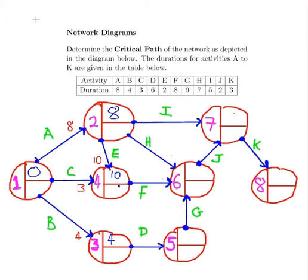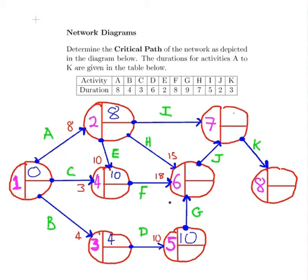For node five, activity D takes six time units. We can start at time four and will be completed at time ten, so the earliest finish for node five is ten. For node six, H takes seven time units, so the earliest finish via that path is fifteen. Activity F takes eight time units starting from the tenth time unit, giving time eighteen. Activity G takes nine time units, giving nineteen. The greatest of these three is nineteen.